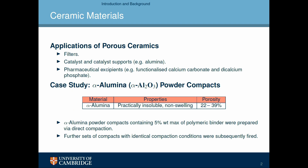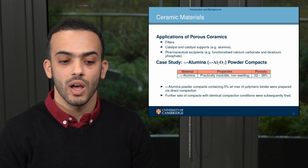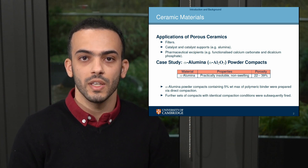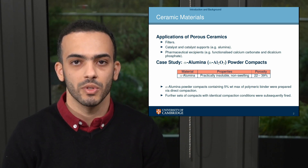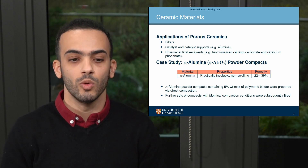Ceramic materials are widely used in many industrial applications, such as filters, catalysts and catalyst supports — we have alumina as an example. They can also be used as pharmaceutical excipients; we have functionalized calcium carbonate and dicalcium phosphate as examples of pharmaceutical fillers. In this talk, I will focus on studying the water transport kinetics in one type of ceramic materials, which is alpha alumina.